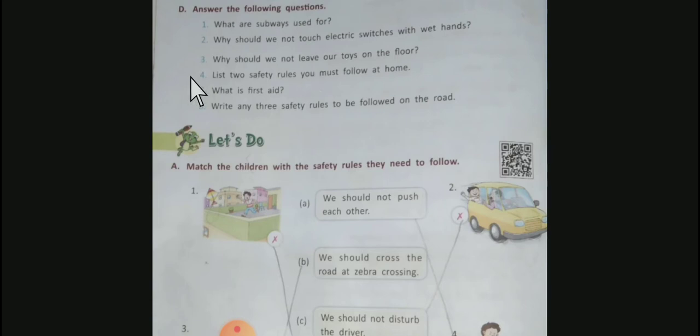Question number four: List two safety rules you must follow at home. Answer: Do not run in the house. Do not touch electric switches and wires with wet hands.